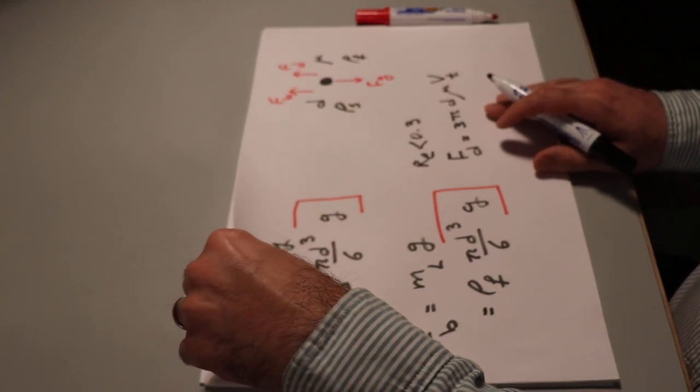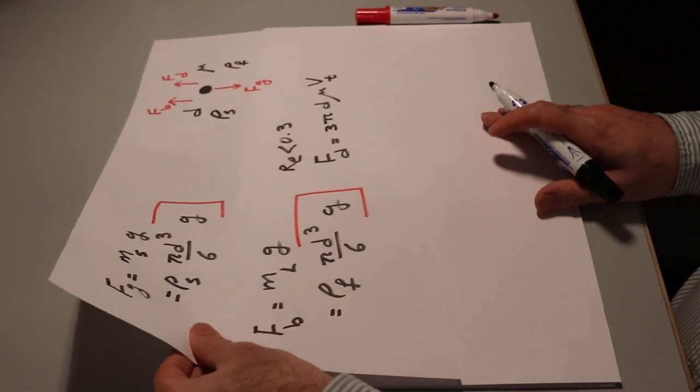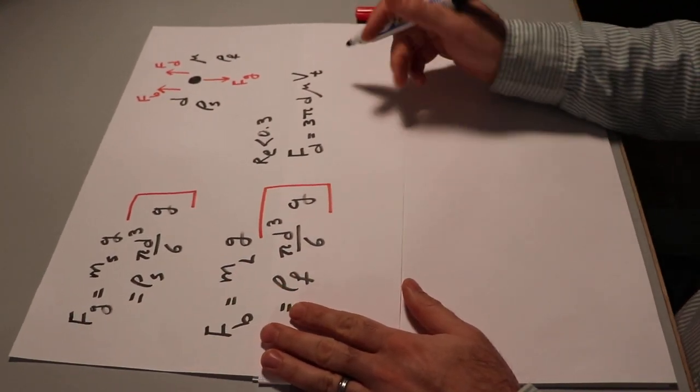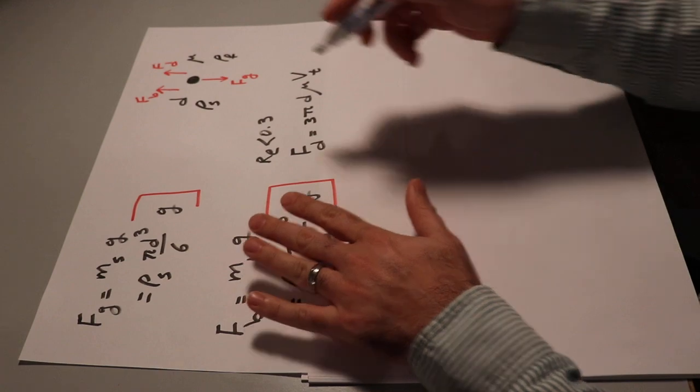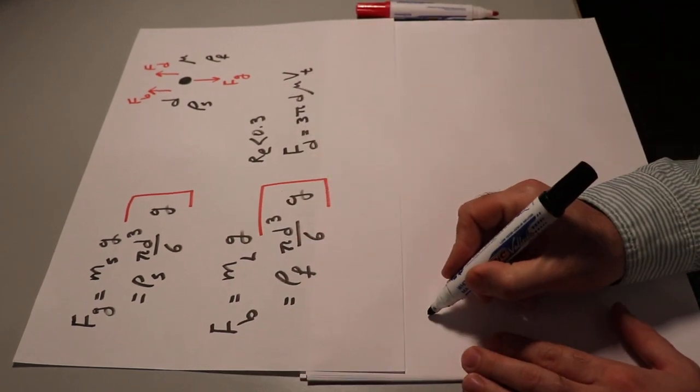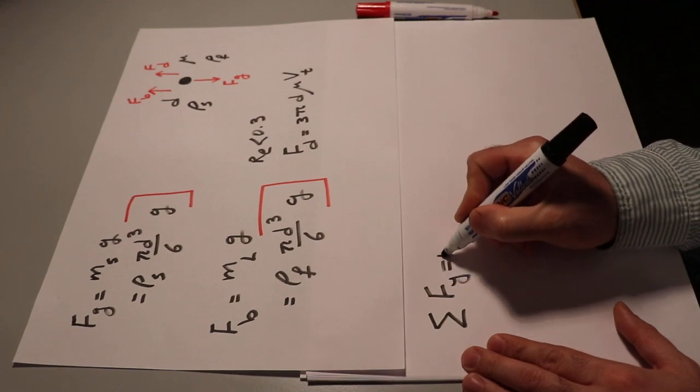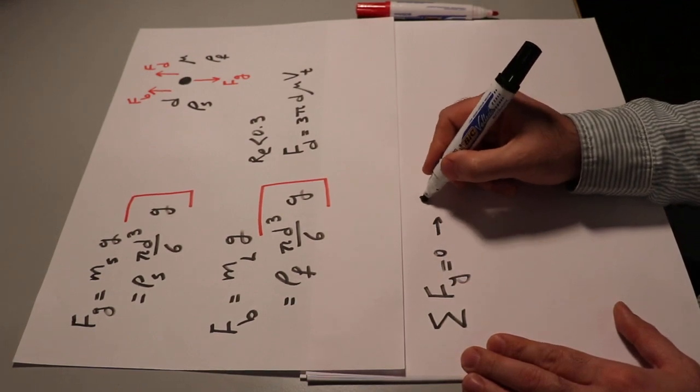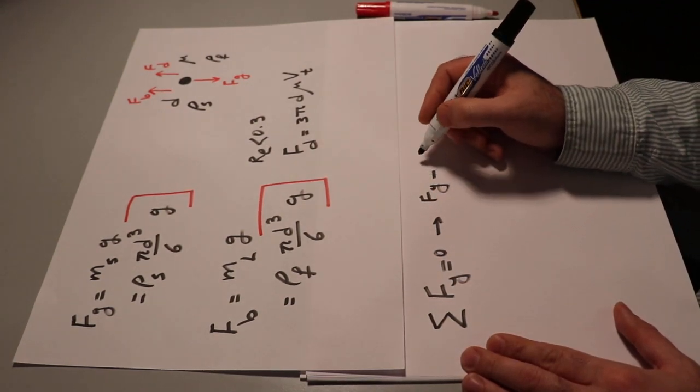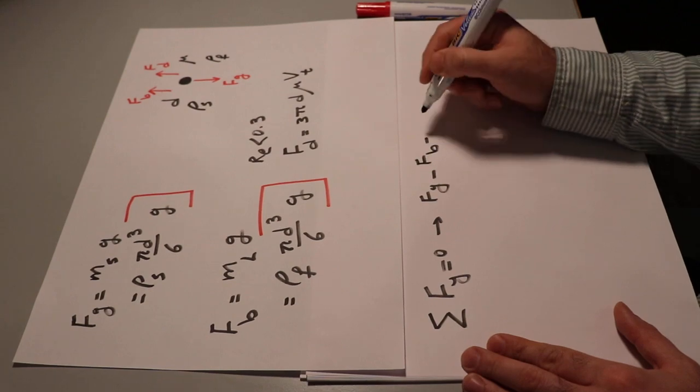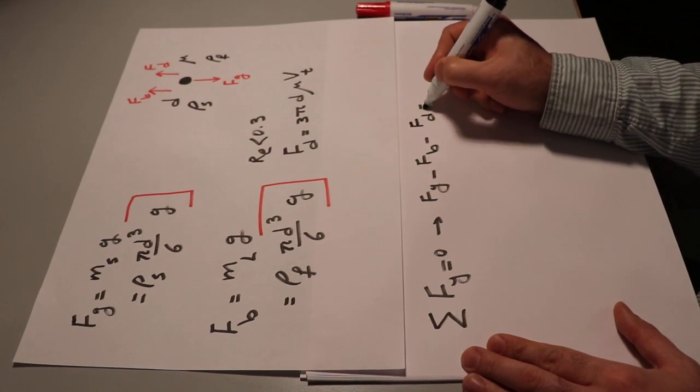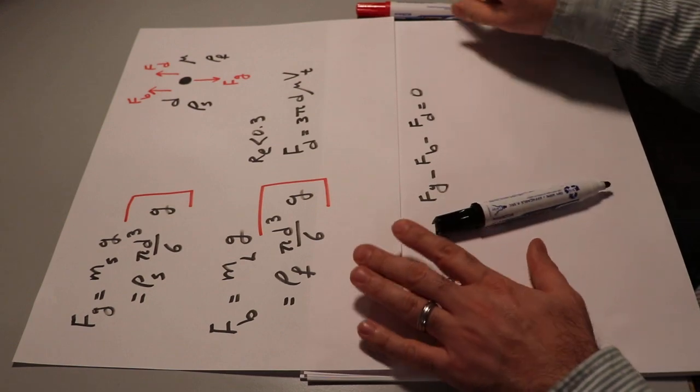So to have the particle move at the constant terminal velocity Vt, the summation of these forces along the y-axis should be equal to 0. In other words, Fg minus Fb minus Fd should be equal to 0.